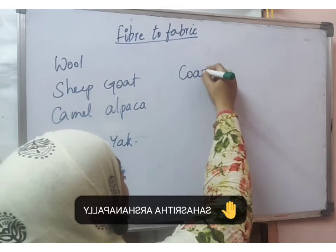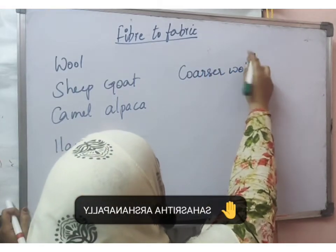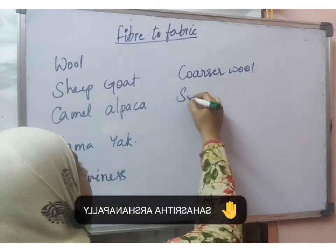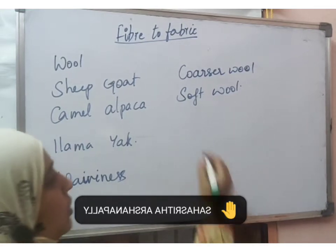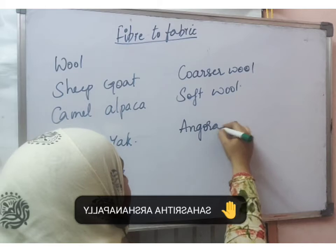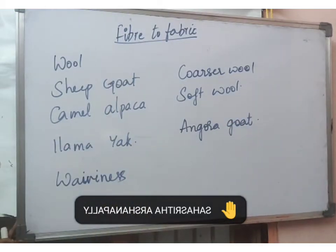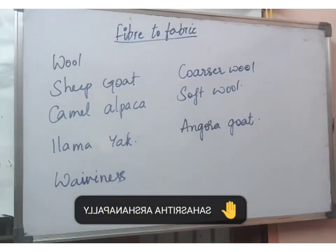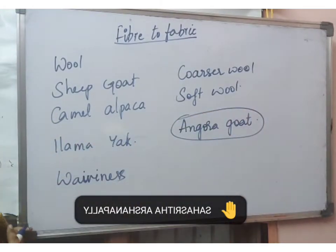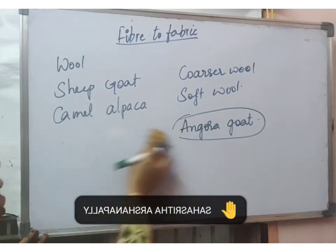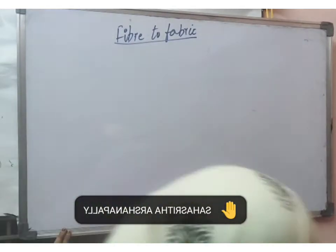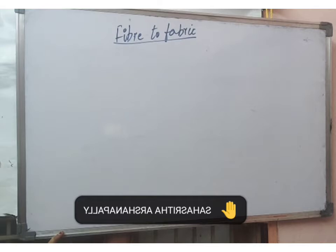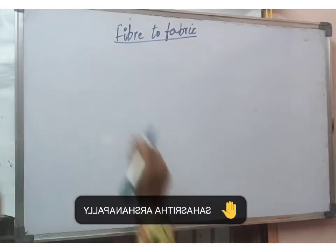Among all the animals, all will not have a similar type of wool. Some have a little coarser wool and some have somewhat softer wool. Those animals which have soft wool — for example, the angora goat — their wool is very special and is preferred over other animals. These animals which produce soft wool are separately selected and made to breed; this process is called selective breeding.